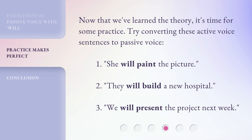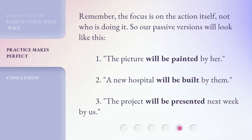Now that we've learned the theory, it's time for some practice. Try converting these active voice sentences to passive voice. Remember, the focus is on the action itself, not who is doing it. So, our passive versions will look like this. One: the picture will be painted by her. Two: a new hospital will be built by them. Three: the project will be presented next week by us.